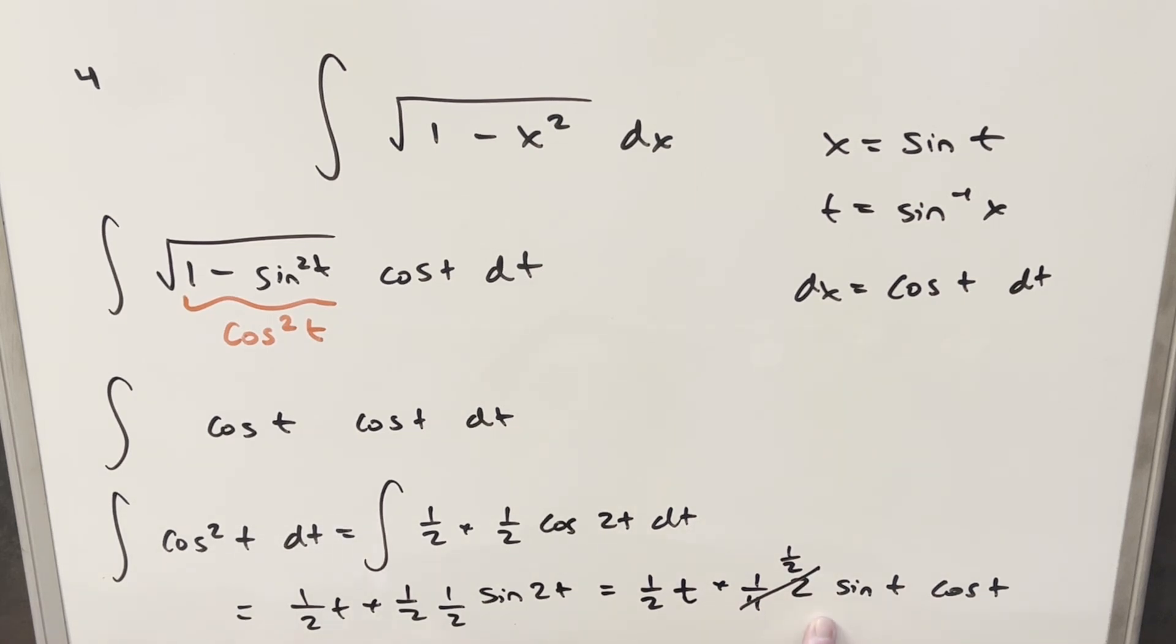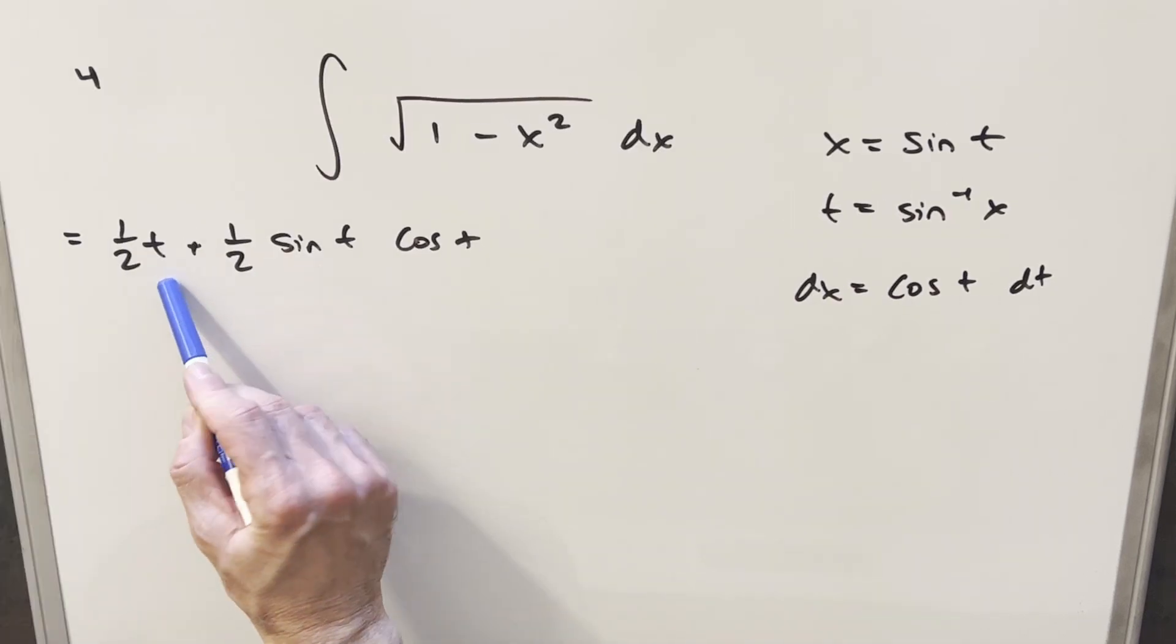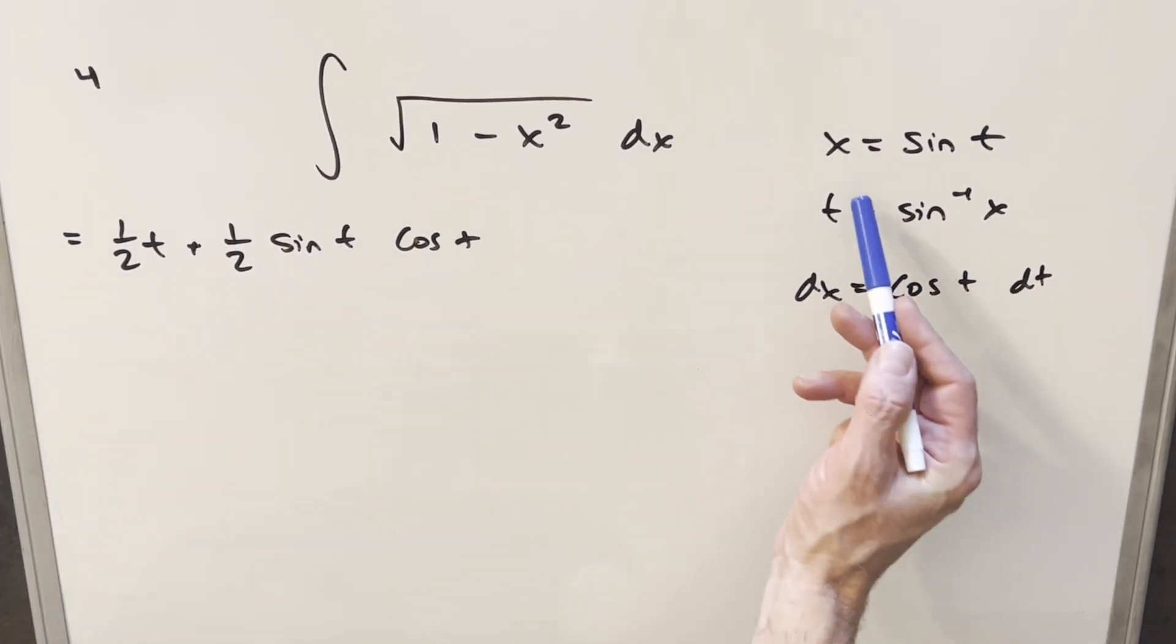We're just going to need to back substitute in order to finish this off. Okay, now we already have a value for t right here. We have a value for sine t, which is just x. So that's easy. All we really need is our value for cosine t.